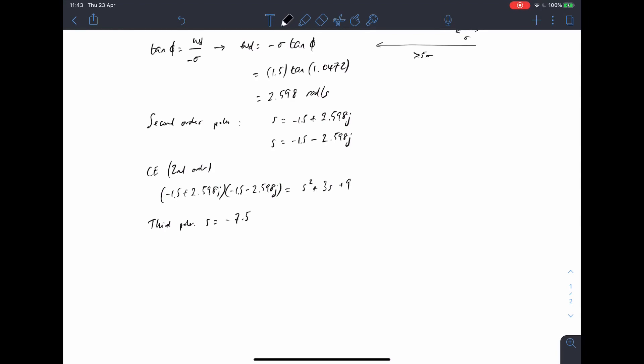And so our characteristic equation now becomes third order. We have S plus 7.5 times by S squared plus 3S plus 9 equals zero.